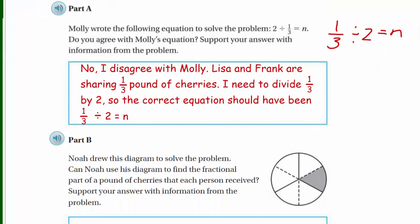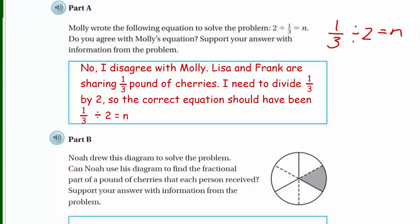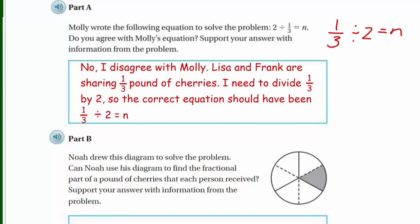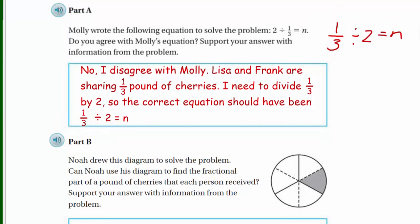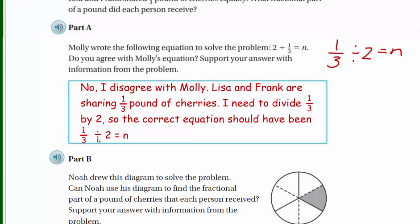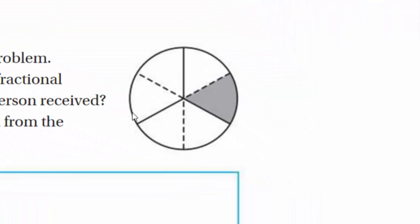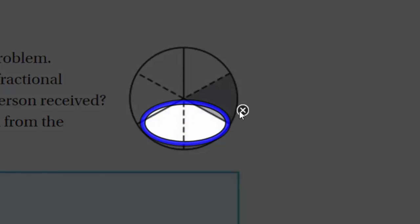Part B says: Noah drew a diagram to solve the problem. Can Noah use his diagram to find the fractional part of a pound each person received? Since we think it should be one third divided by two equals n, Noah drew a fractional circle. The solid lines appear to be thirds — I can see one third, two thirds, and three thirds.